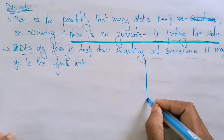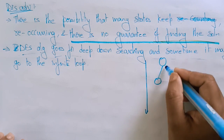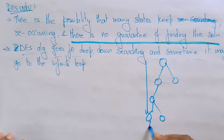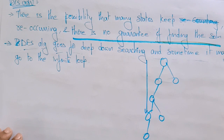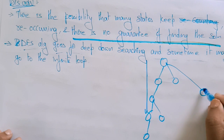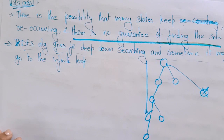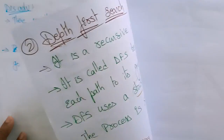Depth first search goes deep down searching and sometimes it may go into an infinite loop, going to the depth until it reaches the goal. If the structure continues indefinitely, it has to go into an infinite loop. For example, if your goal node is present somewhere here but you are searching deep down elsewhere, this is a main drawback of using depth first search.